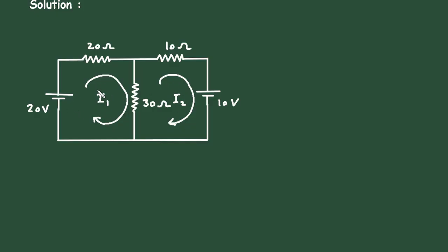According to the direction of current I1, the polarities are assigned: positive, negative, positive, negative, positive, negative across the respective elements.